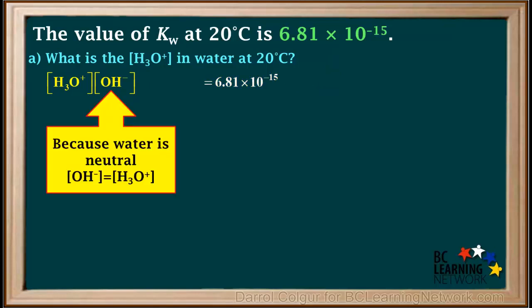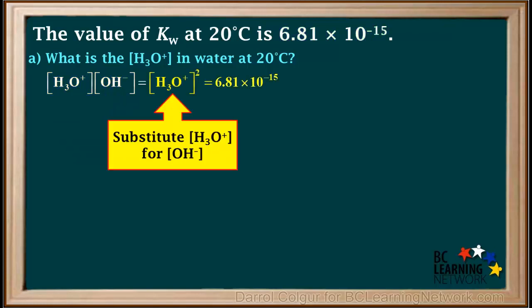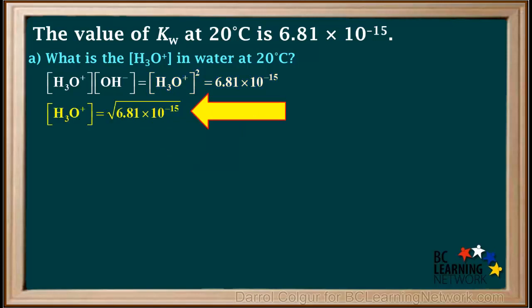Because water is neutral, the concentration of hydroxide is equal to the concentration of hydronium. So we can substitute the concentration of hydronium in for the concentration of hydroxide and get the concentration of hydronium squared is equal to 6.81 times 10 to the negative 15th. So the concentration of hydronium is the square root of 6.81 times 10 to the negative 15th.